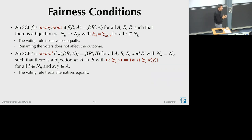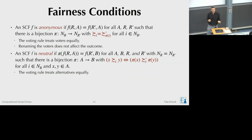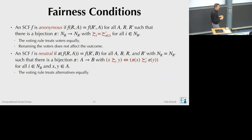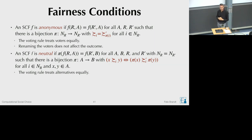Majority rule for two alternatives—pick A if a majority prefers A, pick B if a majority prefers B, return both if tied—satisfies both anonymity and neutrality. So how can we violate neutrality while retaining anonymity?